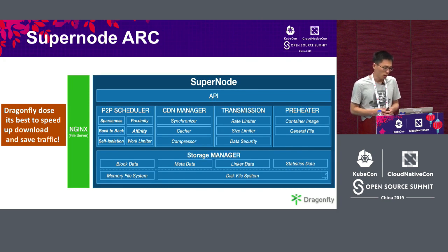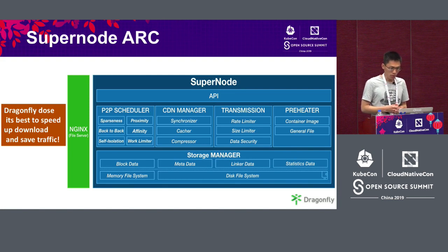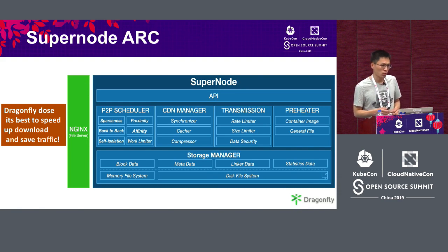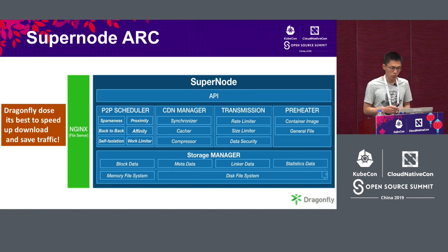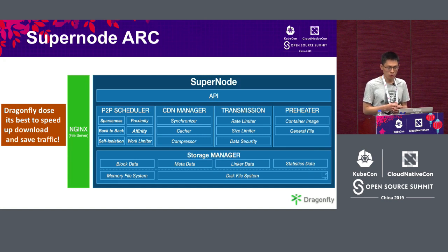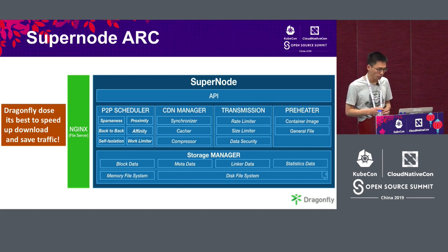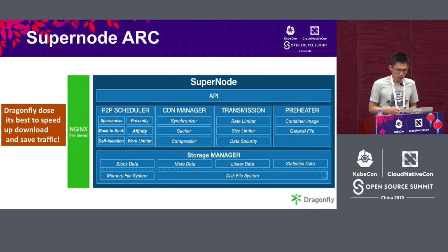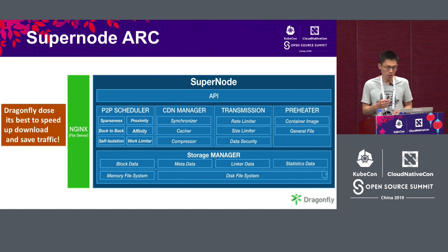Now let's look at the Supernode architecture. Supernode has several modules. On top, we have an API gateway providing a REST API. The core modules include P2P scheduler, CDN manager, transmission control, and preheater. On the bottom, we have the storage manager. I will give a detailed introduction of every module.